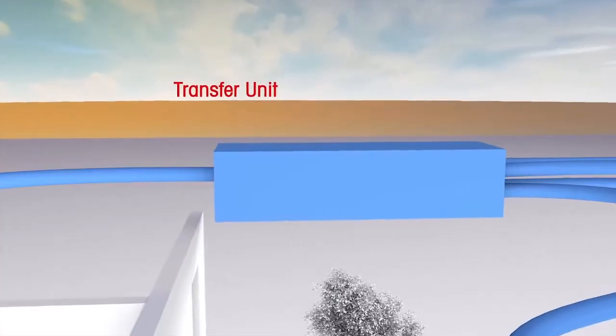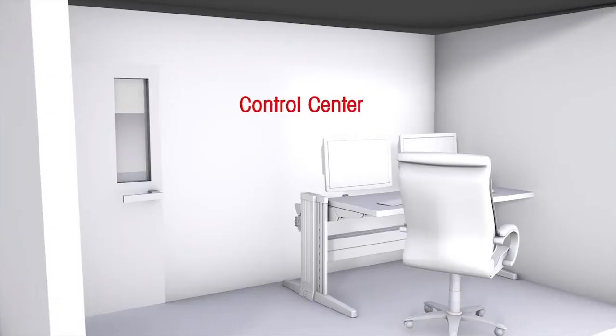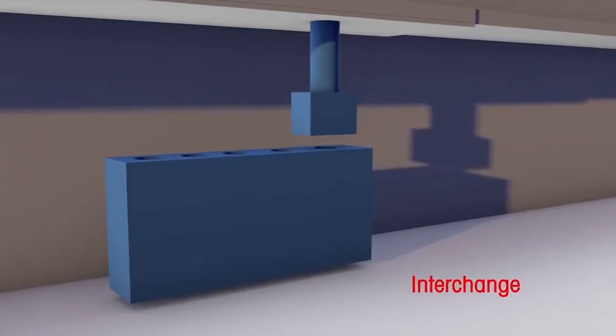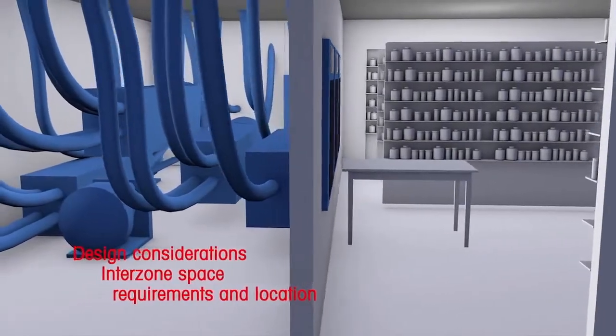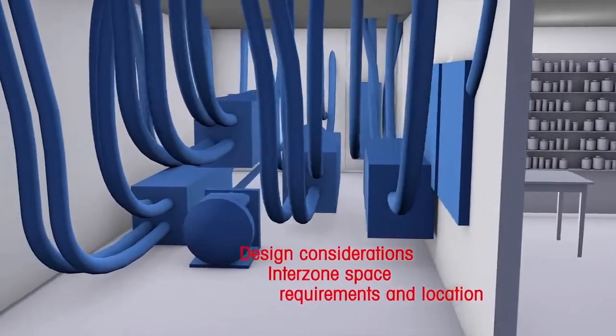Each component of the pneumatic tube system requires advanced planning during the design phase. The system's interzone is in an area that has specific space requirements.